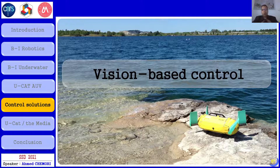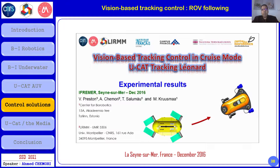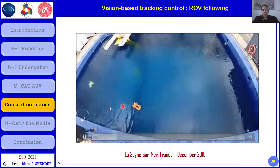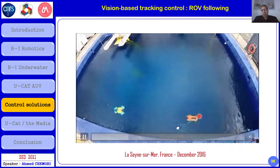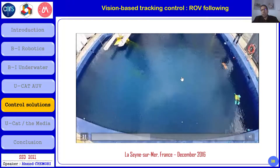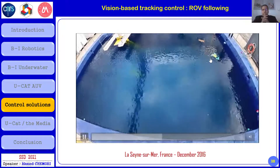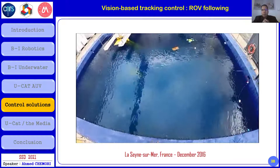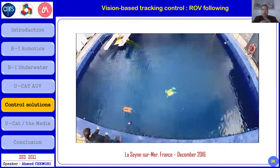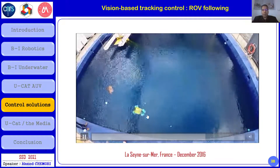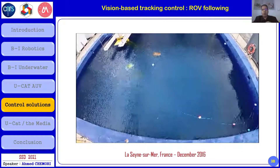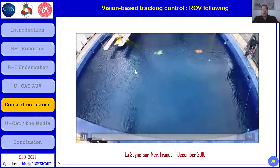For vision-based control, the onboard camera is used to design a controller to follow a moving target — an ROV controlled by a human in a swimming pool. UCAT automatically follows the moving target. Tracking performance is very good, though the challenge is losing the target if the ROV moves outside the camera's field of view. Controller parameters and vehicle reactivity must be tuned to avoid this.